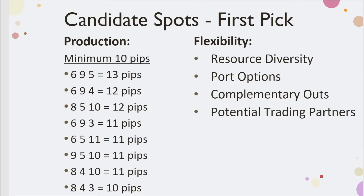One of the most underrated things in Catan is your ability to look at an opening position and calculate the board in a way that is advantageous to you. I'm looking for two main things: production — a minimum of 10 pips — and flexibility. Flexibility means things like resource diversity, getting multiple different resources, port options, and complementary outs.